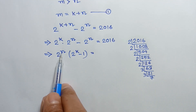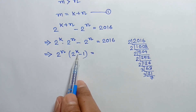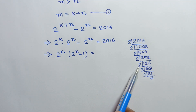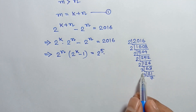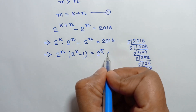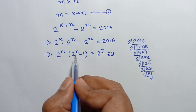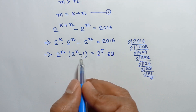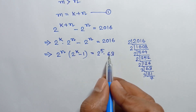So, 2 to the power n is an even number and 2 to the power k minus 1 is always odd. Finding the factor of 2 appearing 5 times, we can write 2016 as 2 to the power 5 times 63, where 63 equals 3 × 3 × 7. Since one term is even and the other is odd, comparing both sides, we get 2 to the power n equals 2 to the power 5, and 2 to the power k minus 1 equals 63.